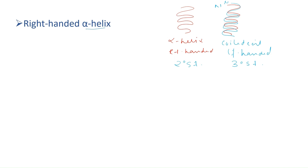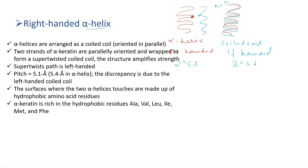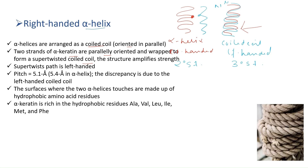In the coiled-coil arrangement, the hydrophobic amino acids of one alpha helix face the hydrophobic amino acids of the second alpha helix. The two strands are parallel — the N-terminal of one alpha helix faces the N-terminal of the other — and they twist to form the coiled-coil structure. This provides and amplifies strength, just like a rope where two thin strands are coiled together to form a thicker, stronger rope.